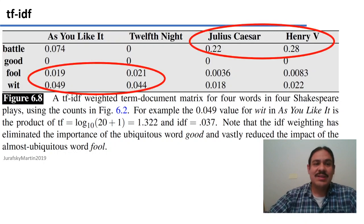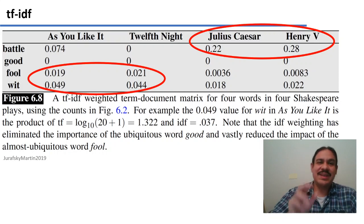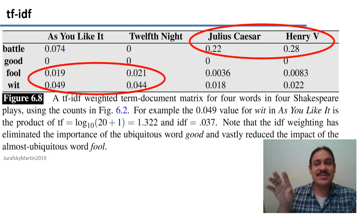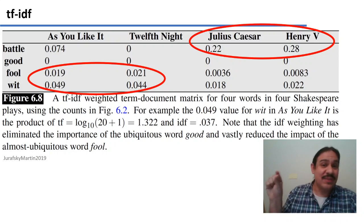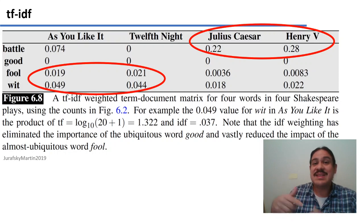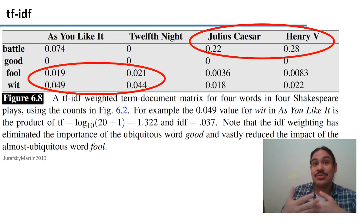We can see that this has very interesting properties. We still have the clusters we detected before — 'battle' is most frequent in the tragedies Julius Caesar and Henry V, and 'fool' and 'wit' are most frequent in the comedies As You Like It and Twelfth Night. But the word 'good' is now zero throughout all of our plays, because it was never relevant to begin with — it appeared in every play and therefore uniquely described no play.